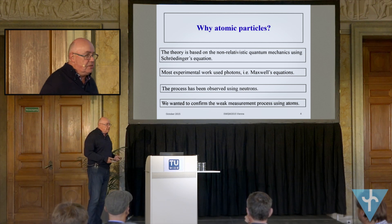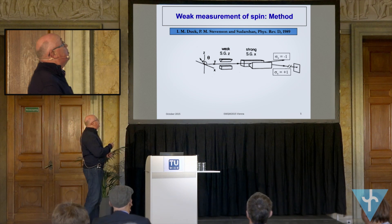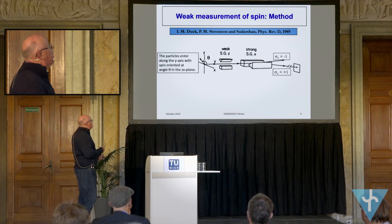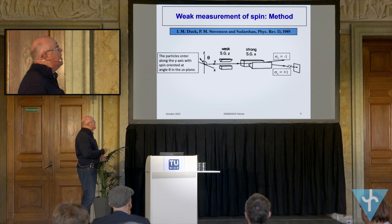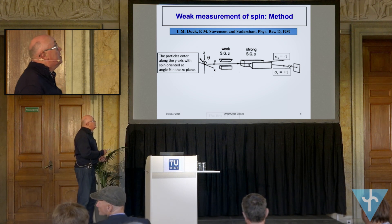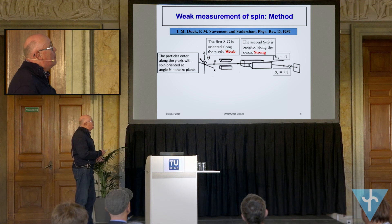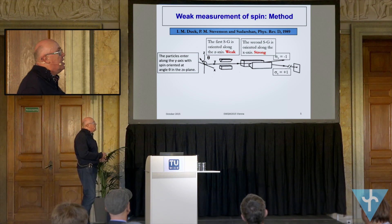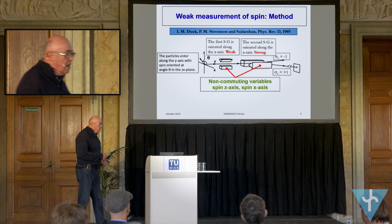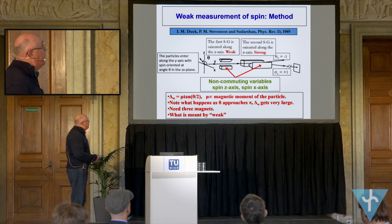That's the task we've set ourselves. The method we're going to use — you've seen this diagram before — it's the one in the paper by Duck. The atoms come in from the side along this axis. They're spin-orientated at some angle theta, and they go through the weak stage first. There are two stages: this weak stage and then this strong stage. There are two magnetic fields set at right angles, one obviously much stronger than the other, and they are non-commuting.